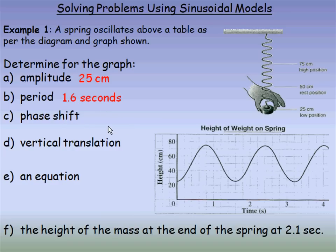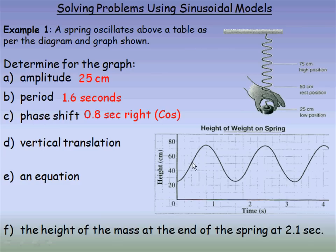The phase shift depends on whether you're using a sine or cosine model. For cosine, we think of it as starting at a peak — so peak to peak is one full cycle. The phase shift, which is another word for horizontal translation, is how much the cosine graph has been moved from the vertical axis to the first peak, which is 0.8 seconds to the right. For a sine model, the phase shift is 0.4 seconds to the right. Either way, the rest of your answers will be the same — it will not matter which model you use.